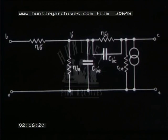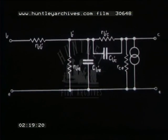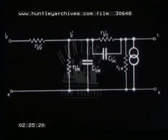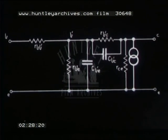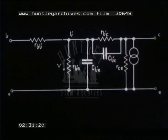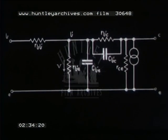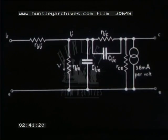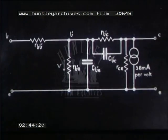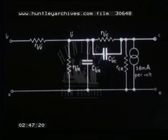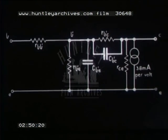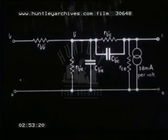We now arrive at the hybrid PI grounded emitter circuit. This circuit has a current generator acting directly across its output terminals. This generator is a function of the signal voltage between B' and E. The value of the current generator is about 38 milliamps per volt when the transistor is operated with a DC emitter current of 1 milliamp. The transistor has internal feedback, mainly through the capacitance C_B'C, which would have a similar effect on the amplifier as the grid-anode capacitance of a triode valve, and a similar process of neutralization is applied.